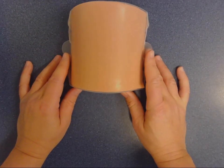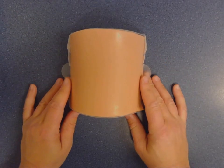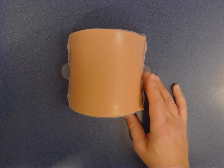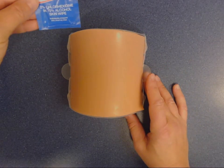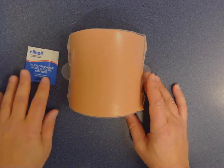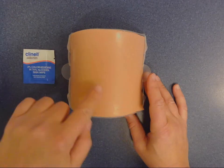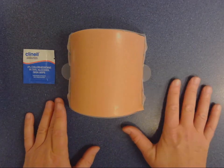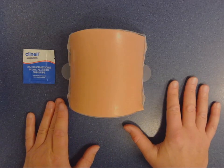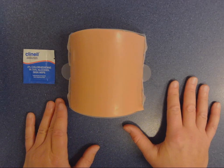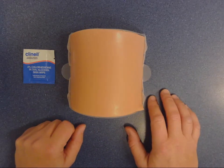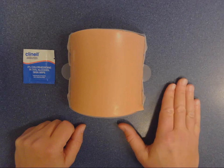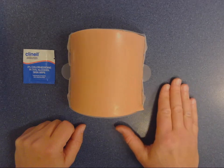If the skin is visibly dirty, we'll clean the skin with a Steret or an alcohol wipe. We clean the skin for 30 seconds in a circular motion, and then we let the skin dry for 30 seconds, which allows the alcohol to evaporate and take away all the bugs that are on the surface of the skin. But if the skin is visibly clean, then we don't need to prep the skin with the alcohol wipe.